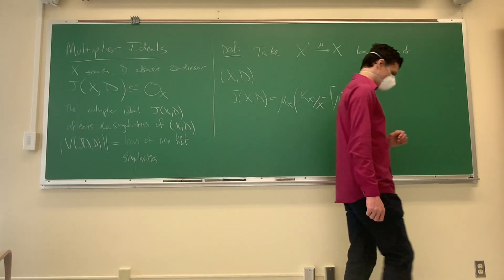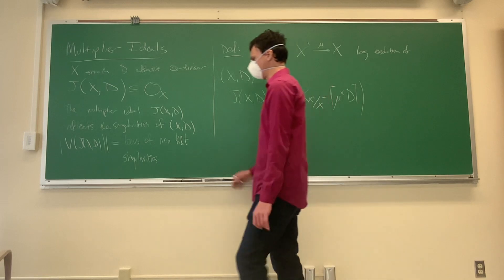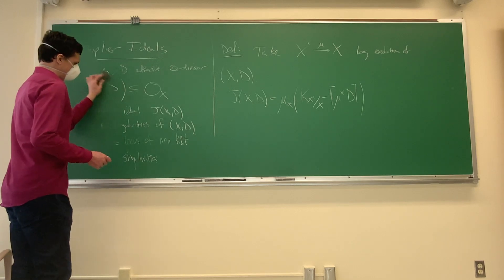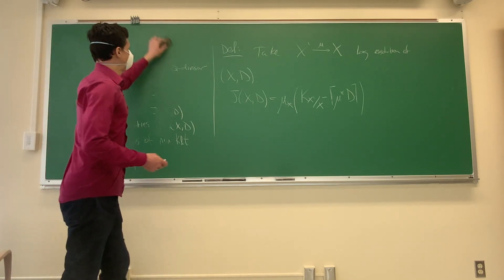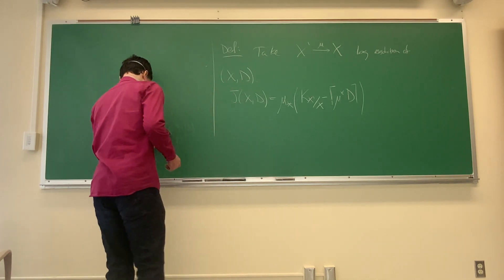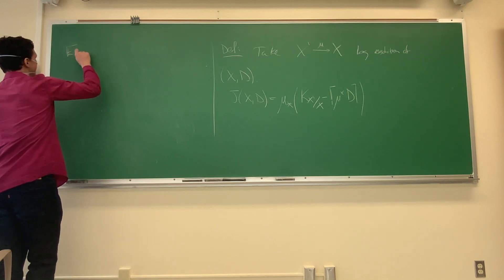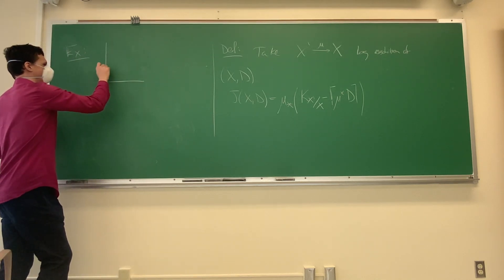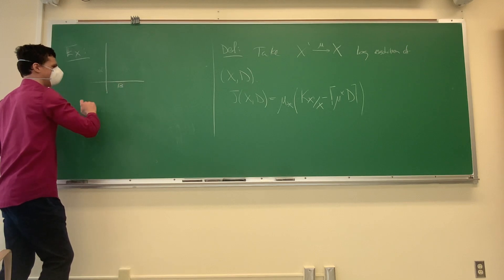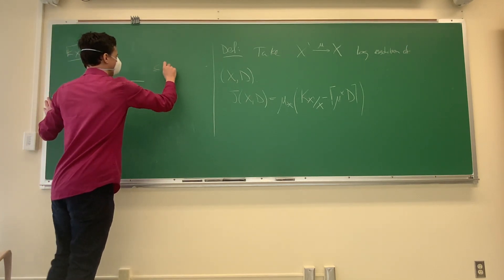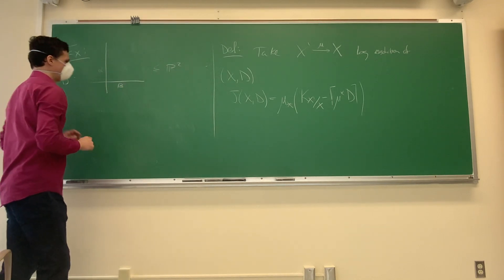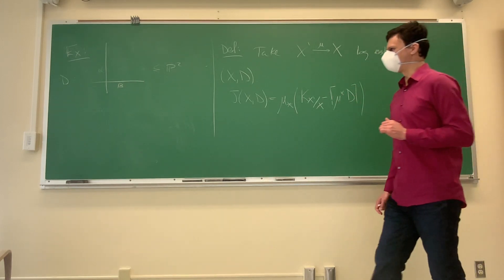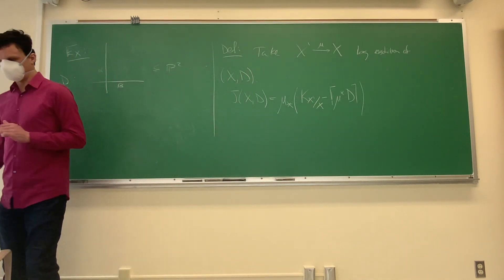Let's do some examples — the standard ones are just thinking about P² or surfaces. Suppose I have a normal crossing divisor with coefficients α, β in A² or P², and this is my D. I want to compute what the multiplier ideal is.